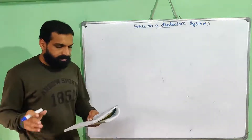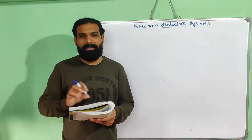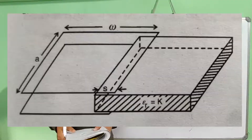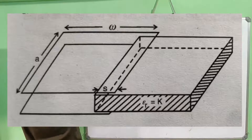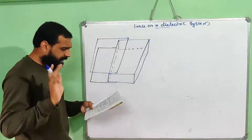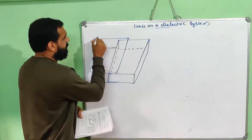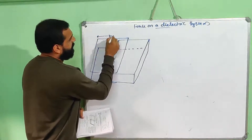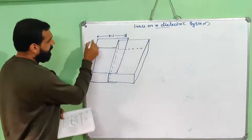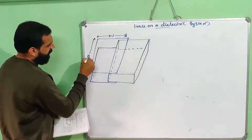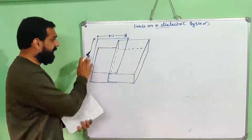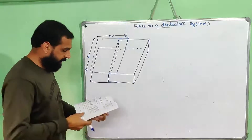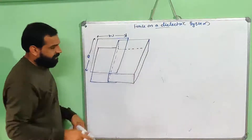There is a diagram. This is the width W. This is the length A. This is the height W. This is the same dielectric material.